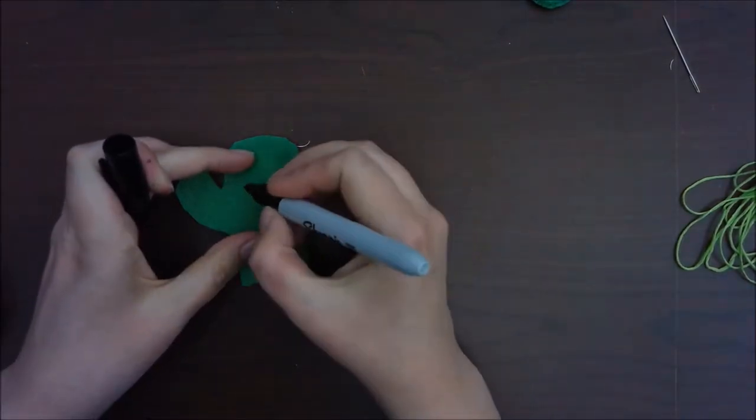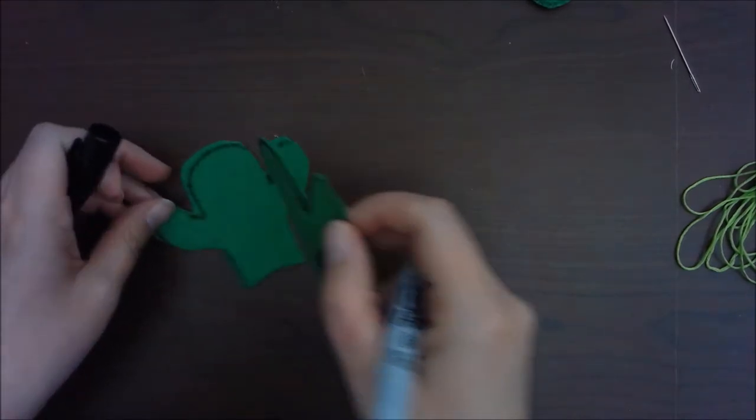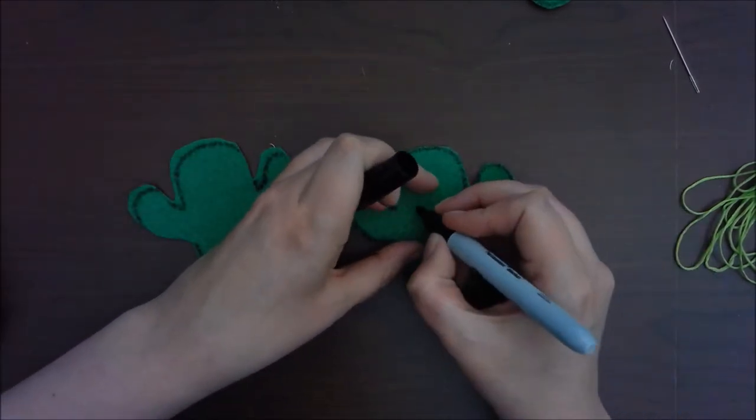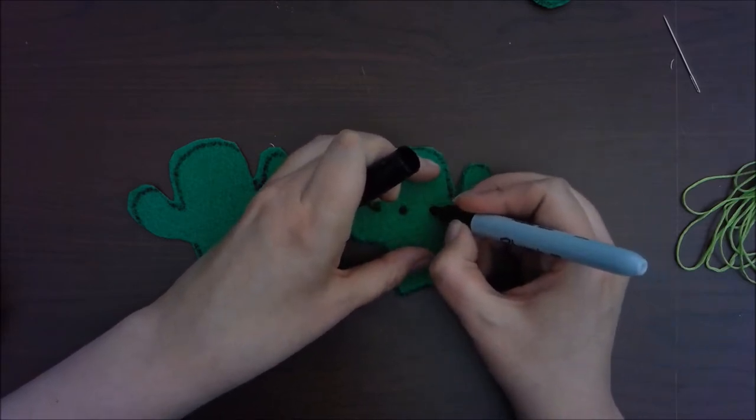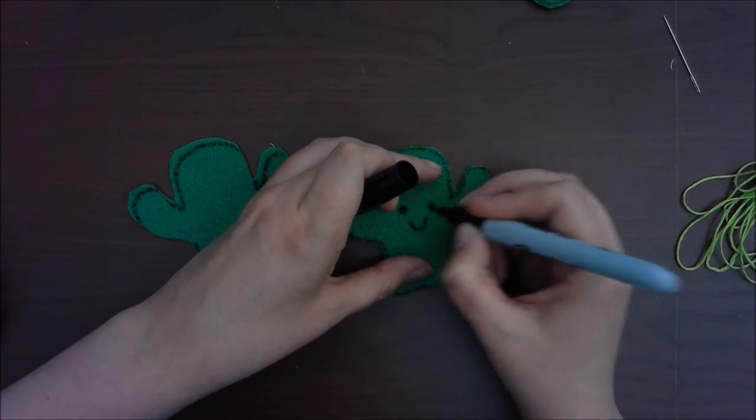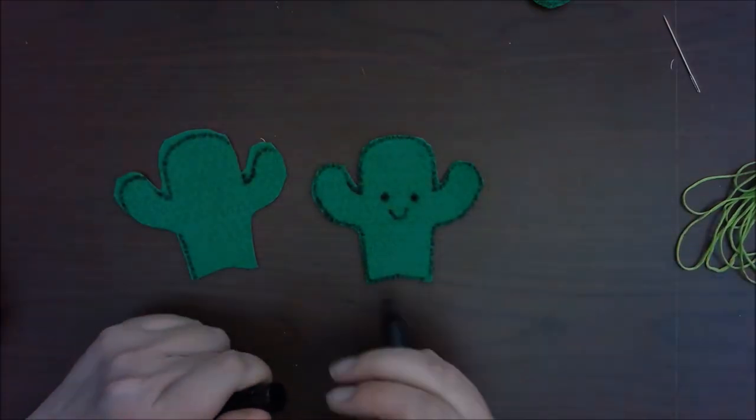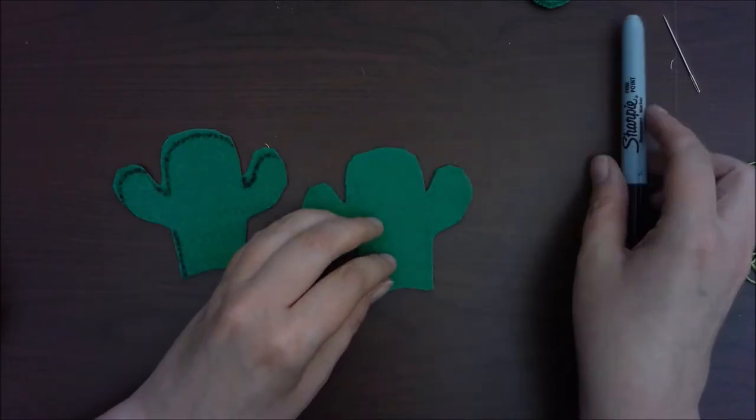So you have a choice here. You can take your sharpie and draw your own eyes and a mouth on, or you can sew your own eyes and sew a mouth on. Just to show you both, I'm going to do the sharpie on the back end, and this will kind of line up for my front when I go to sew the eyes and the mouth on.